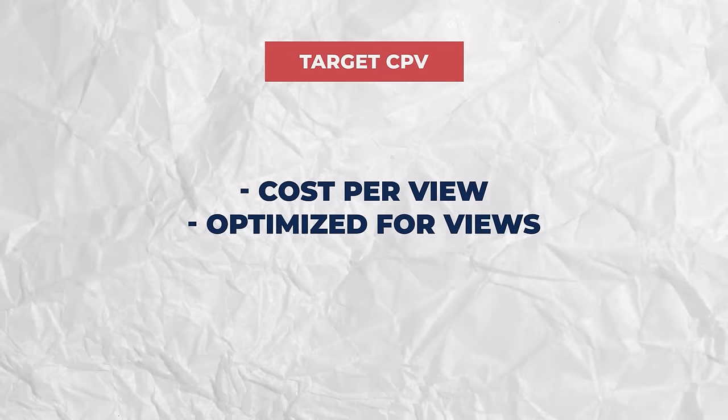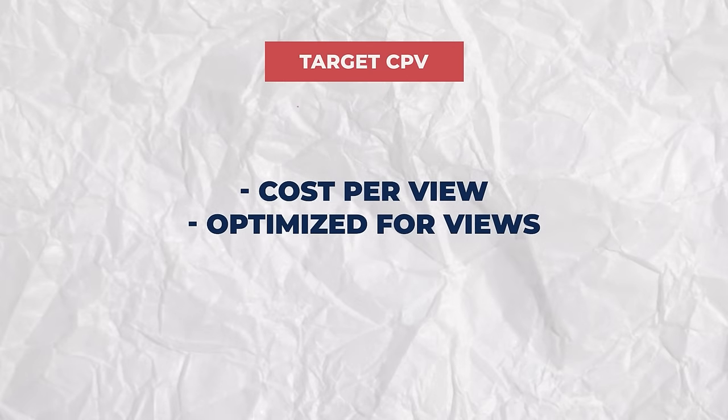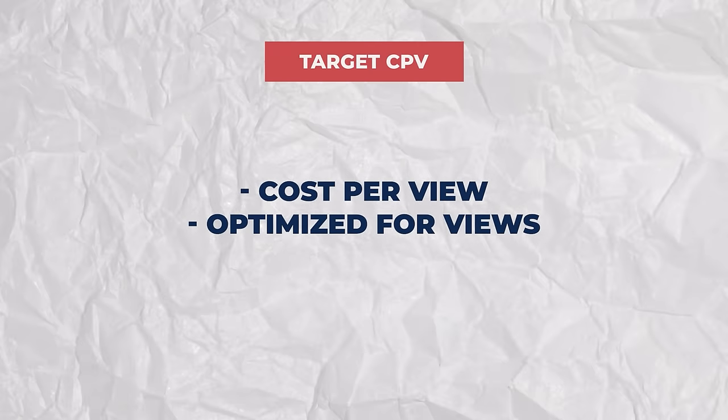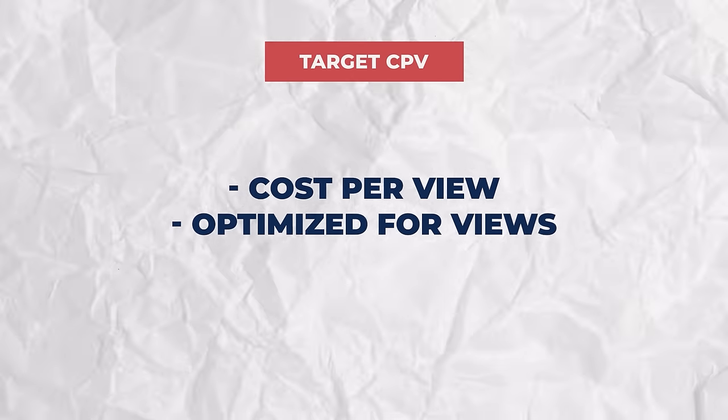Next is target CPV, similar to target CPM, but instead of paying for 1,000 impressions, you set a price per view. YouTube counts a view as somebody watching at least 20 to 30 seconds of your ad or clicking on it. So the ads are optimized for views rather than general impressions. However, we still don't recommend this bidding option because you're not there to get views — you're there to make sales and get customers.